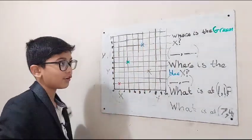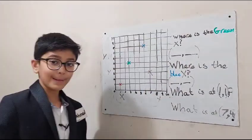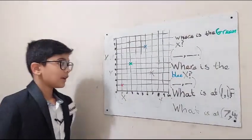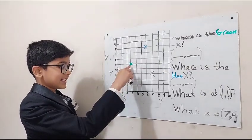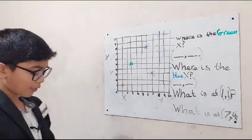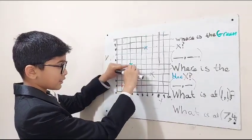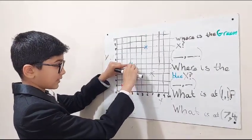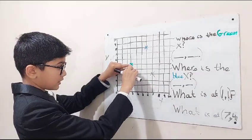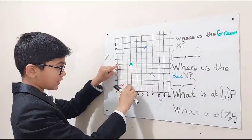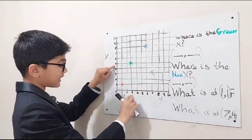Now first we have to locate the green X on our grid. So the green X is here. Now what we've got to look at is the middle of the green X—it's right there—and we're going to go down the lines and across the lines till we get to two numbers.